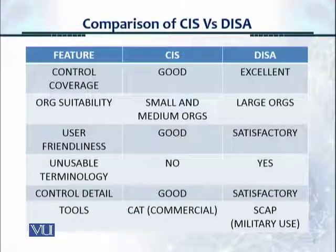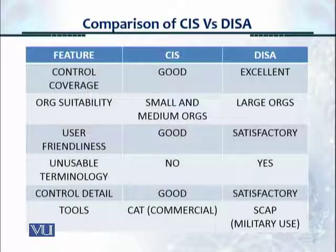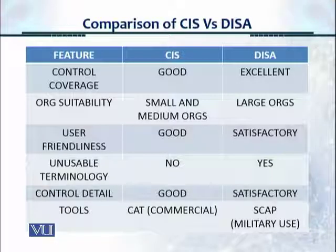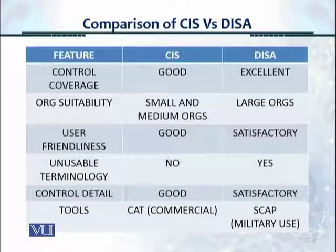For control detail, CIS goes into a lot of detail — it gives you a lot of description about the controls and what to do. DISA's control detail is okay; it's more to the point but gives you the coverage. If there are additional automated tools available, CIS has a CAT tool, which is a commercial tool you have to buy — it automatically checks if controls are in place and gives you reports. For DISA, they also have a tool, but it's only for military use, which is called SCAP.